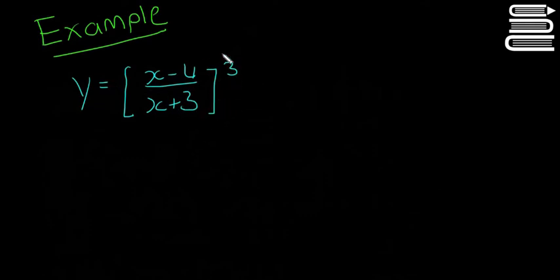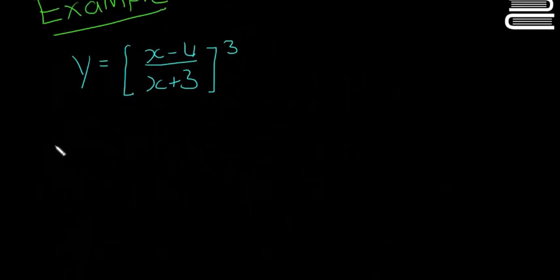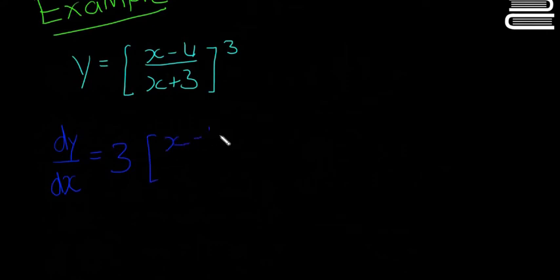So again, this is chain rule because we have a function outside of a function, but it's a little bit different, so we'll see what it's like anyway. We're going to start by differentiating it. We're going to go dy/dx, we're going to use our onion analogy, we're going to do the cubed bit first. It's going to be 3 times [x minus 4 over x plus 3] squared, times the differentiation of the middle bit. So it's the outside bit differentiated times the inside layer differentiated.